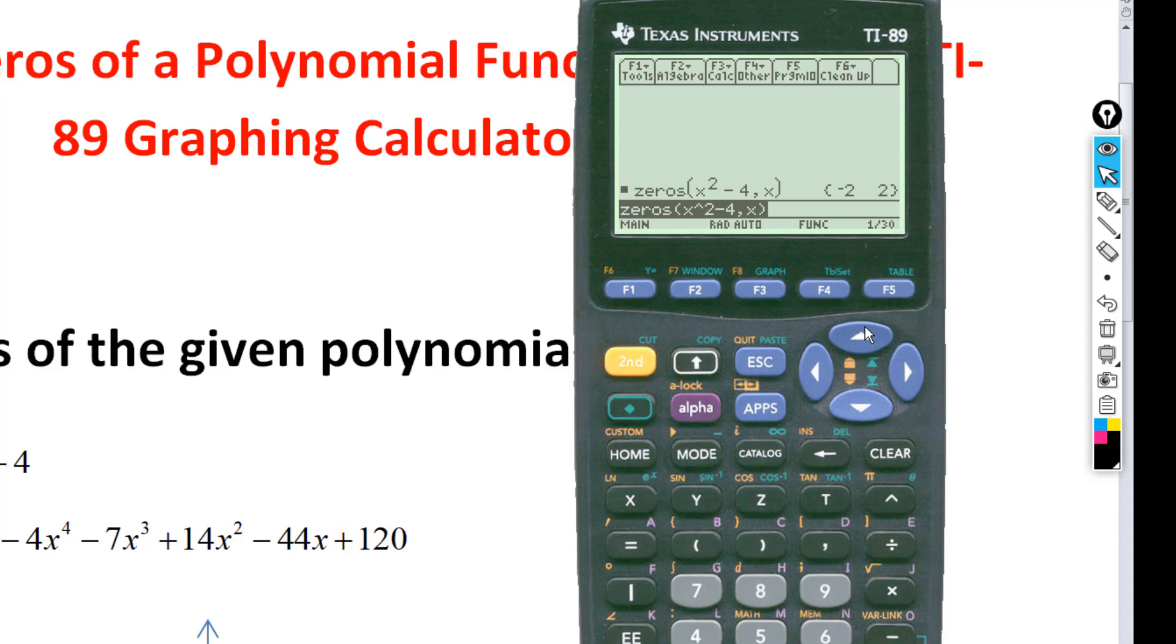Now, notice what happens if I do this, and I clear this, and let's say I make that minus or a plus. And hit enter. See, notice I get an empty set. So, when you enter this command, zeros, it only gives you the real zeros, not the complex or the imaginary ones.